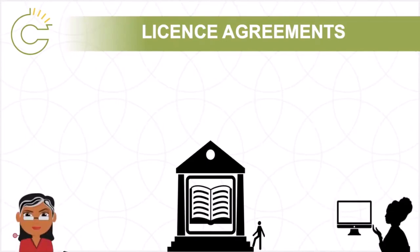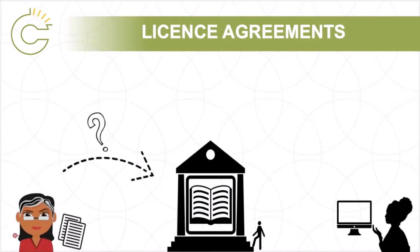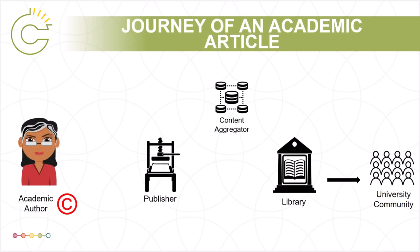Don't profs just write articles and then the library provides access? And how is copyright involved in all of this? Well, it's a bit more complicated than that, although some open access publishing models are moving in that direction. Right now, however, it is more likely that books and articles written by professors — such as Professor Pam — and graduate students will be published in an academic journal. The steps between writing and accessing the book or article may vary, but in general it involves the author, the academic publisher, content aggregators, and libraries.